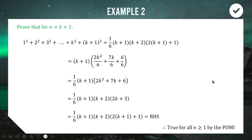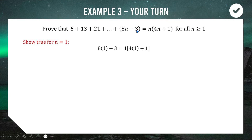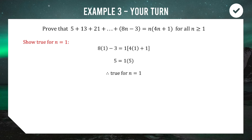Let's try another one — a bit more mild. If the last two examples made sense, I encourage you to pause the video and have a go yourself. Step 1: show true for n=1. On the left-hand side, 8(1) − 3 = 5. On the right, 4(1)(4(1)+1) = 1 × 5 = 5. We get 5 on both sides, so the statement holds true when n=1.